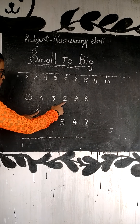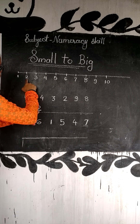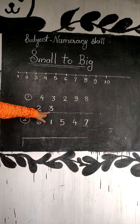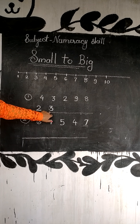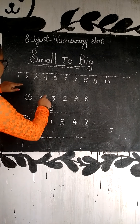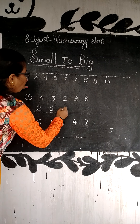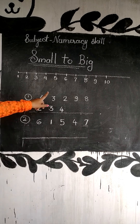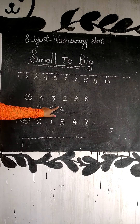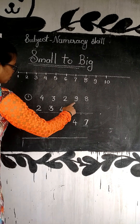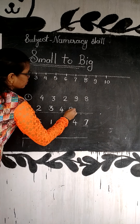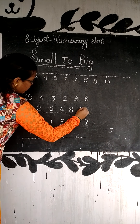So which number is small? 2, and then after 2 comes 3. Then the next number is 4. And after 4 the next small number — is it 9 or 8? It is 8, and then the last and biggest number is 9.